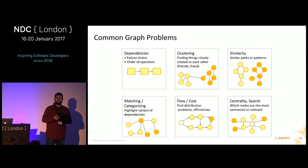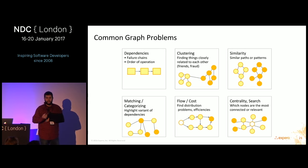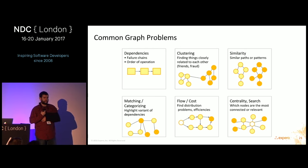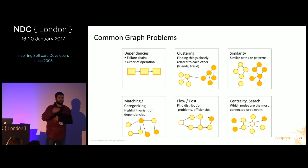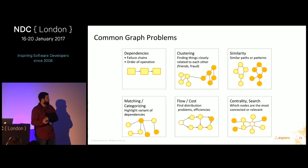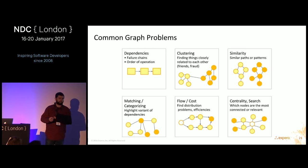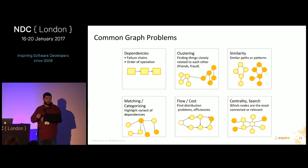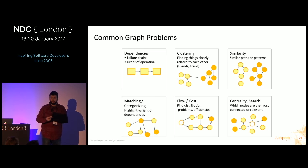Similarity: finding things with similar paths or patterns. For instance, in recruiting software, what is the most common career path for people who started where I am to become CEO? Matching, categorization, flow cost problems — like Google Maps, which is a shortest-path type problem. And centrality and search: finding the most influential person in a social network.